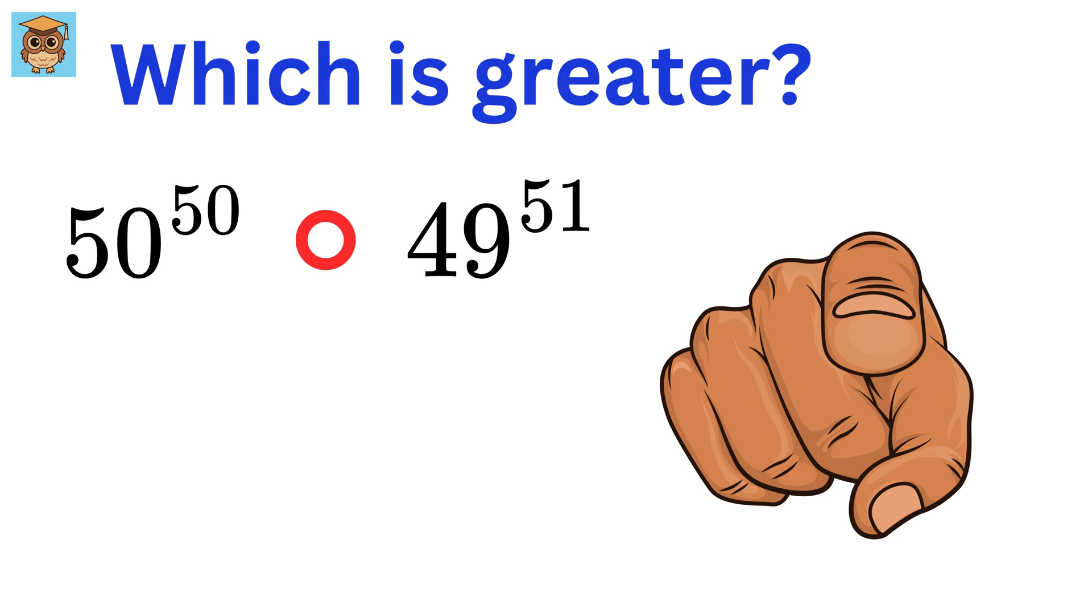So, can you solve it? As a first step, let us divide both sides of this by 49 raised to 51. So the left-hand side will be this, and the right-hand side will become 1. Now our question becomes comparing 1 with this value.